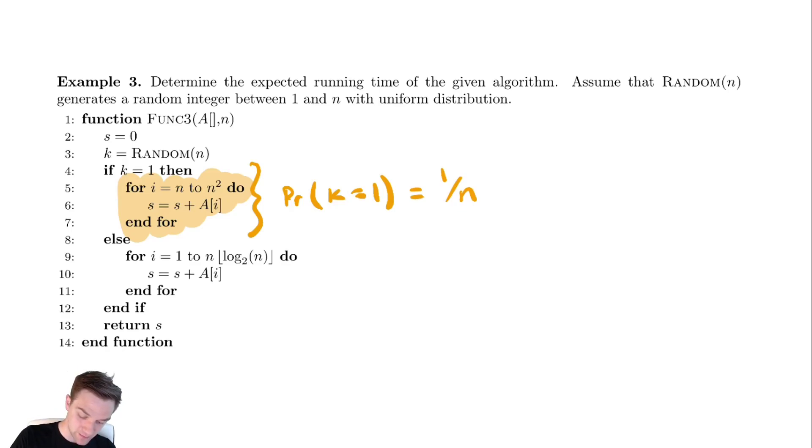And how about that second block of code down here? What is the probability that we actually execute this code? This is when k isn't equal to one. How many options are there? There are n minus one options out of n possibilities.